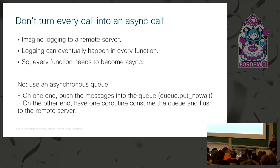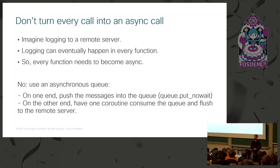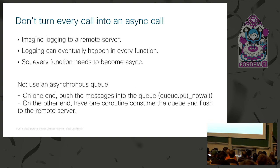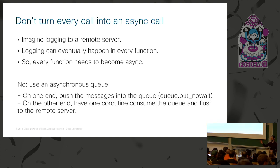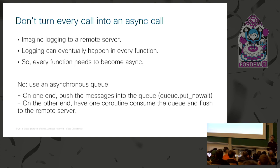One warning: don't turn every call into an async call. People often get this wrong when starting with asyncIO, thinking every function will eventually become async because every function involves IO. But doing IO doesn't mean you have to await it. For example, with a remote logging server, you don't need to await each log message being transmitted. Instead, push logging messages into an async queue and have a separate coroutine consume the queue and flush messages over the network. That way your functions don't all need to be async.